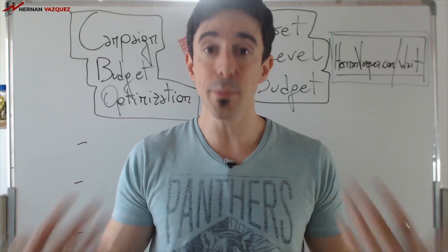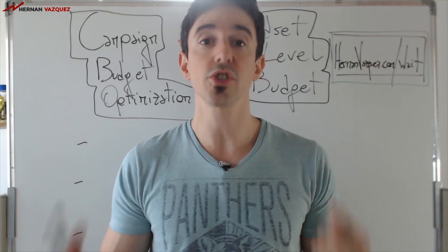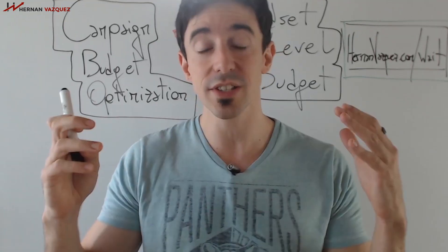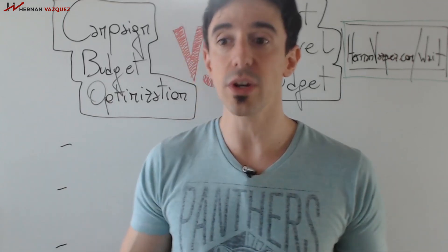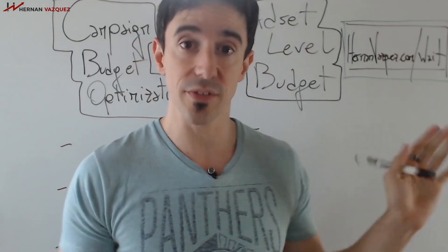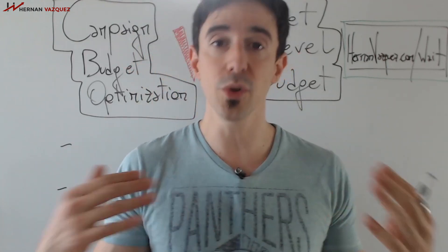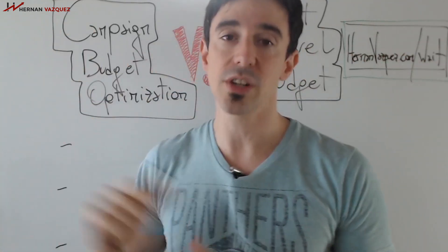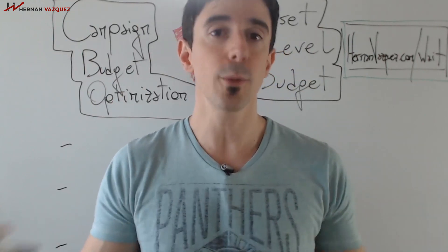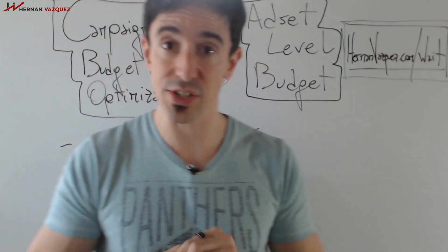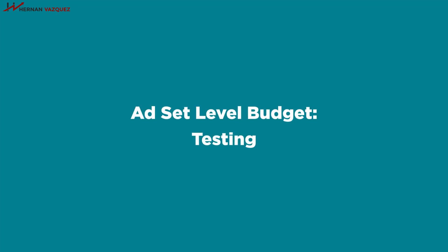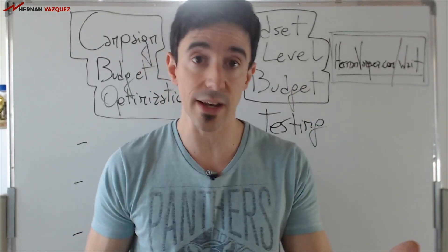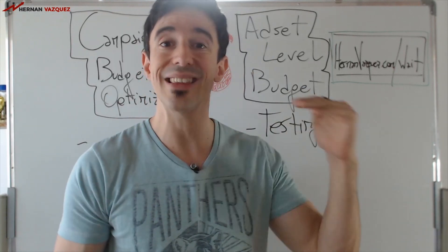There are a couple of reasons why I am a big proponent of ad set level budget when you're starting out, when you're testing. When you're testing an offer, testing audiences, testing creatives, there's always the possibility to create ad set level budget campaigns. I'm a big proponent of ad set level budget campaigns. But when you start scaling — when you have a proven offer, a proven funnel, proven audiences and you want to scale — then campaign budget optimization really does work well. When it comes to testing, I always set up my budgets at the ad set level.